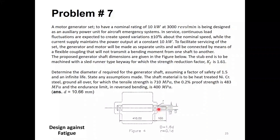There is also a section change on the shaft. The diameter at the larger section is capital D, and the diameter of the smaller section is small d, with a fillet of radius R at the transition. The larger diameter D equals 1.6 times the smaller diameter d, and the fillet radius R equals 0.1 times d. So we have two stress concentration locations: one at the keyway and one at the section change.